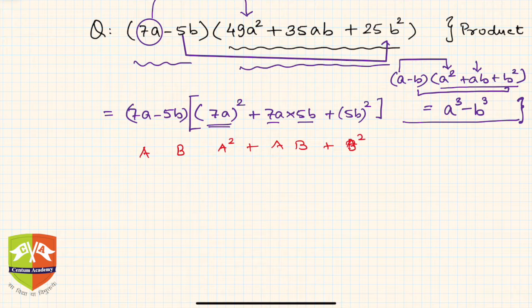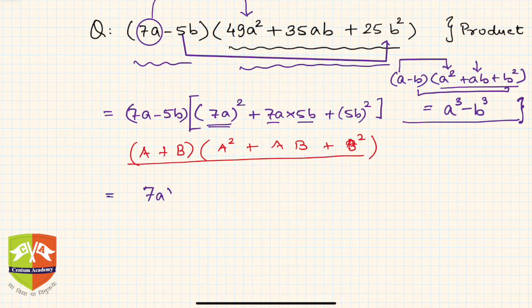So what will be the product? Very easily, the product will be nothing but a cube minus b cube. So (7a)³ minus b cube - b in this case is 5b.